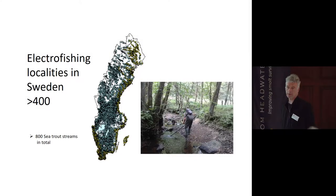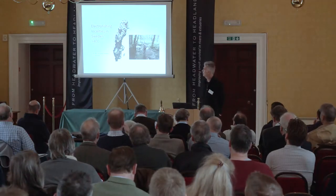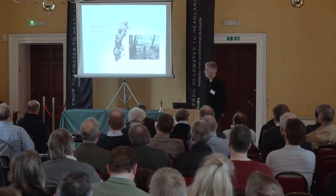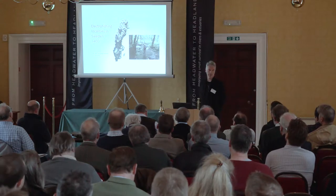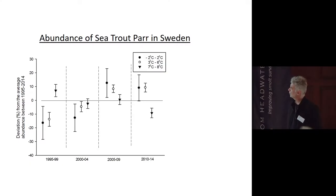The main way we assess sea trout abundance in Sweden is by electrofishing. We have covered almost all of Sweden in electrofishing localities since the 1970s, giving us quite a unique dataset. In total, there are approximately 800 sea trout streams in Sweden, dominated by fairly small streams. On the east coast there are some larger streams where hatchery trout are stocked, but on the west coast it's only naturally produced sea trout.